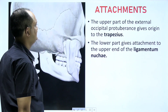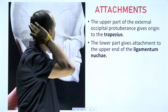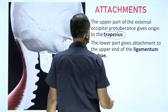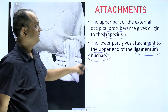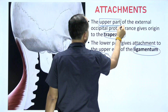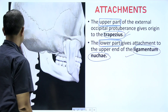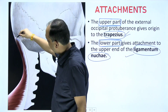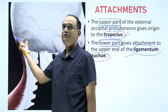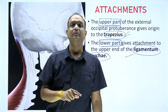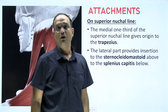Regarding muscle attachments on norma occipitalis: the major muscle visible from the posterior side is trapezius, along with ligamentum nuchae. Both are attached to the external occipital protuberance. The upper portion of the external occipital protuberance gives origin to trapezius, while the lower part gives origin to ligamentum nuchae, which is a midline structure.